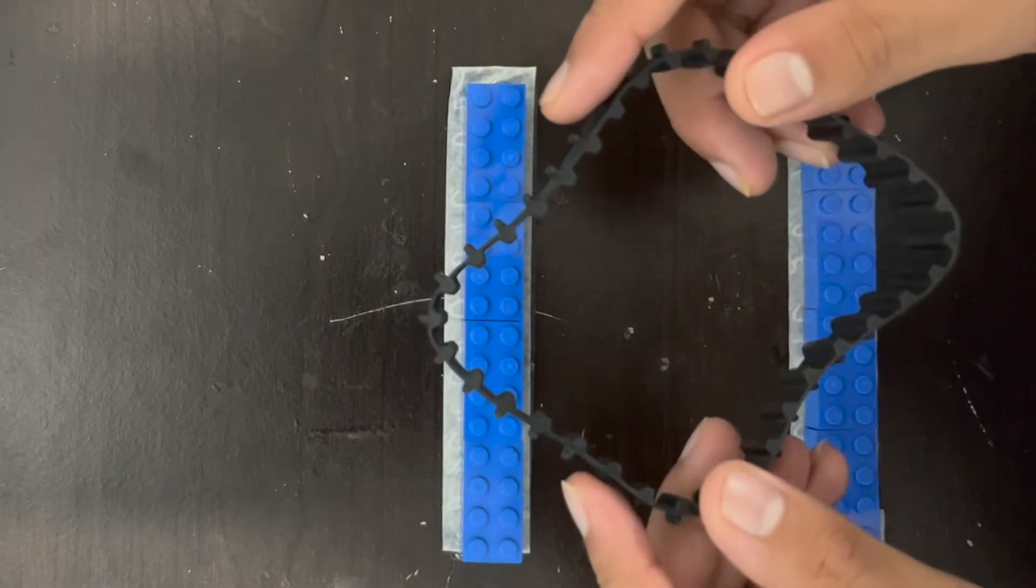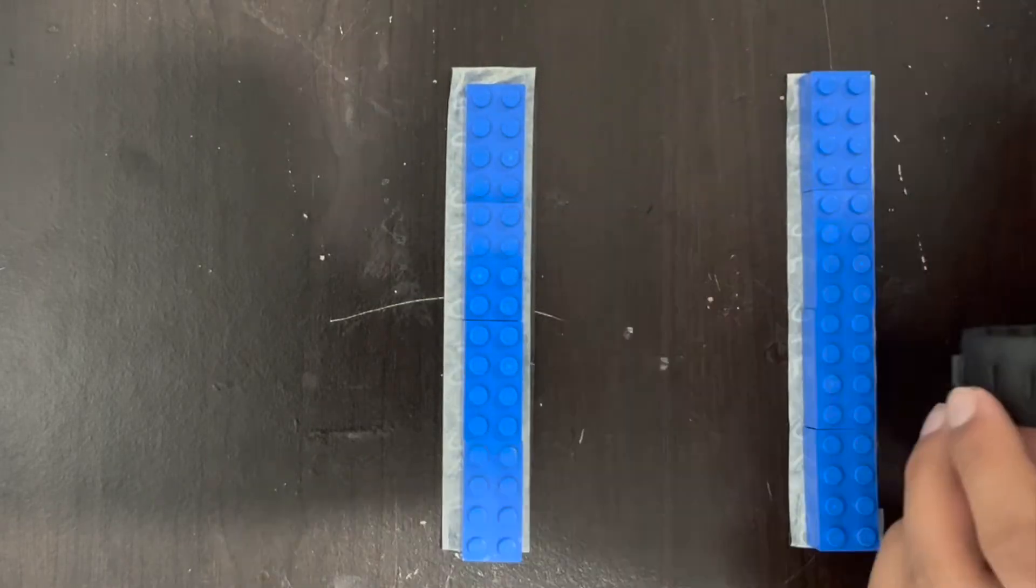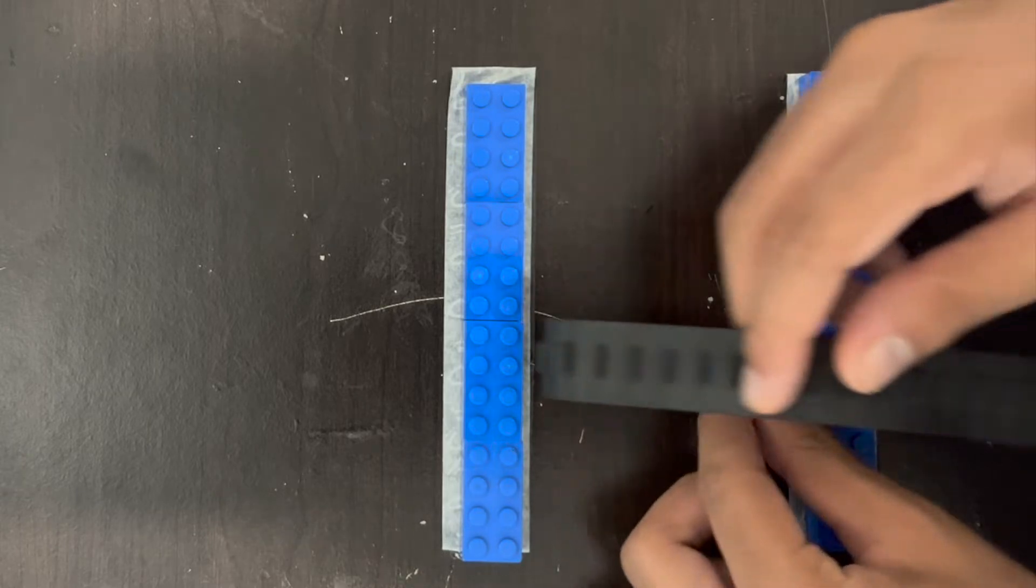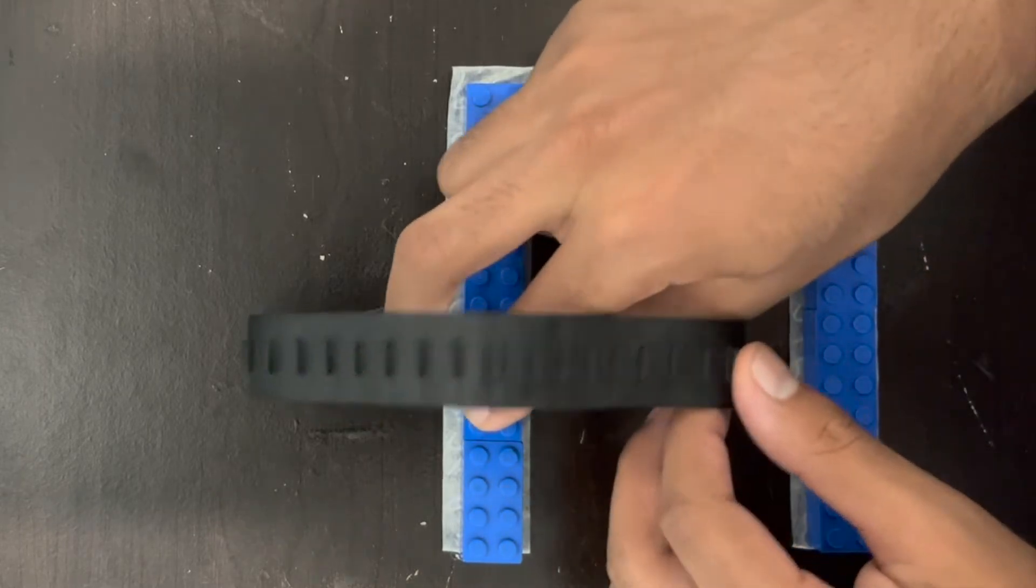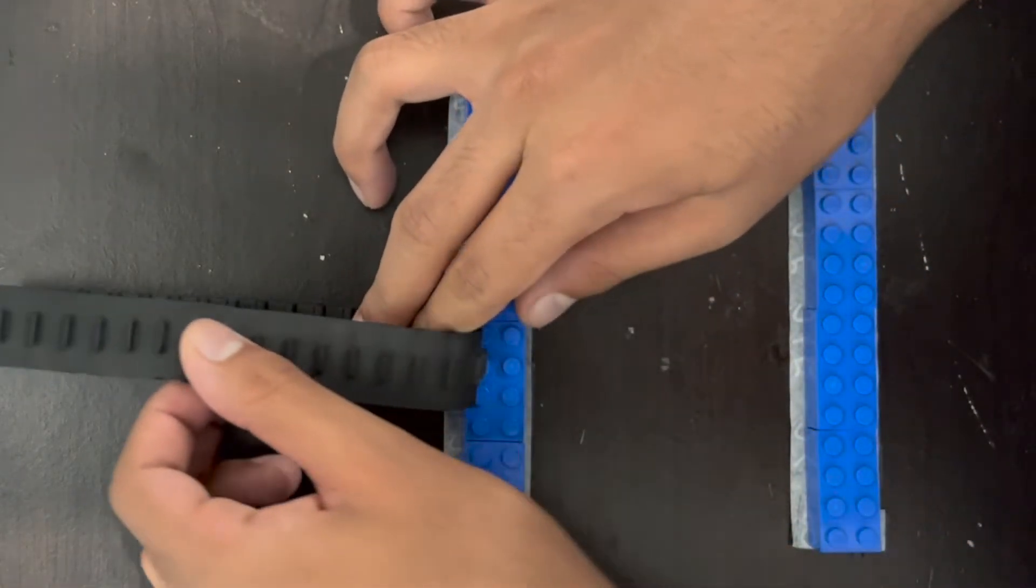In theory, having treads like these would be the best way to solve this challenge, because you'd be able to drive over and the treads would just adapt to the surface that they're on, maintaining a consistent amount of friction.